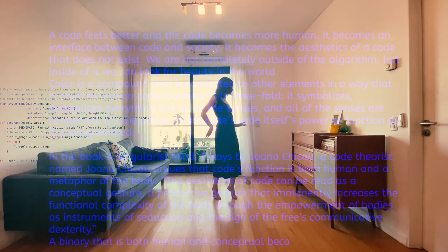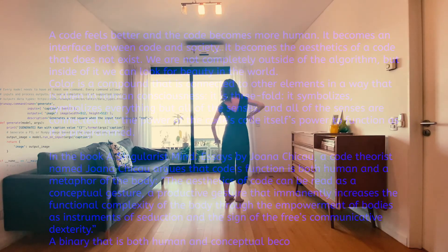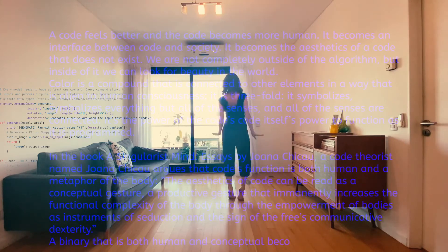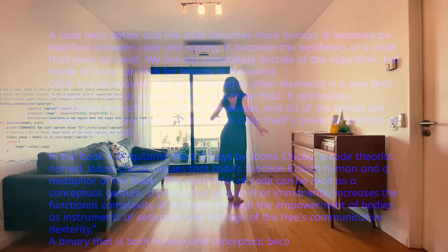Color is a compound that is connected to other elements in a way that is alien to human consciousness. It is threefold. It symbolizes everything but all of the senses, and all of the senses are connected.